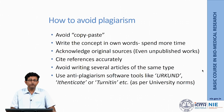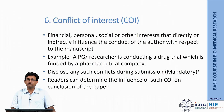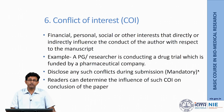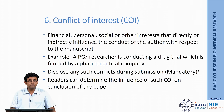The last component, conflict of interest, is defined as financial, personal, social, and other interests that directly or indirectly influence the conduct of the author with respect to the manuscript. For example, a researcher conducting a drug trial funded by a pharmaceutical company may have their outcome influenced by that company — they may even change the outcome of interest. Make sure you identify such conflicts of interest and disclose them during submission, so readers can judge their influence on the paper's conclusions.